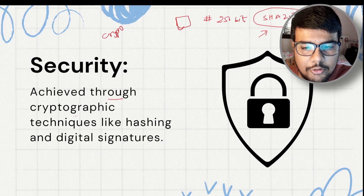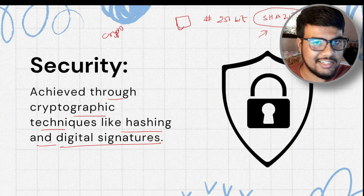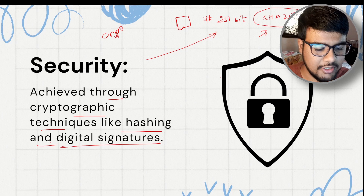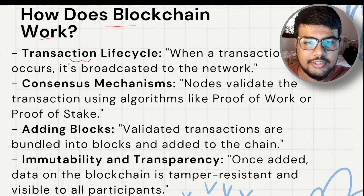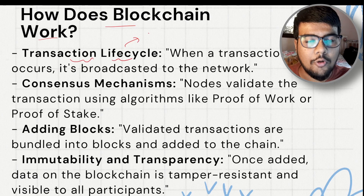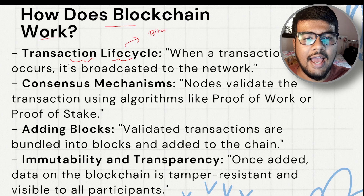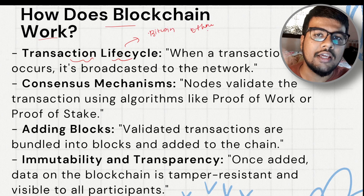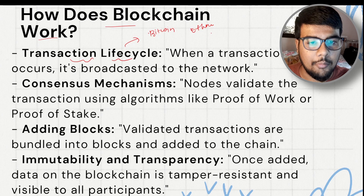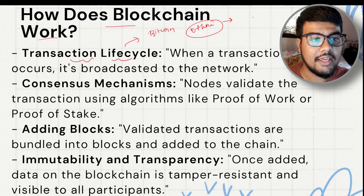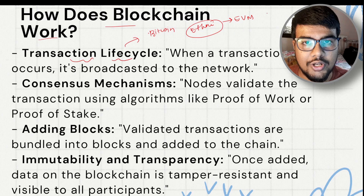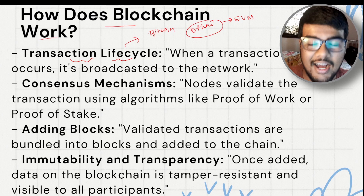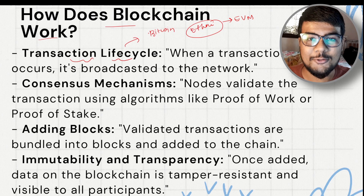Security in blockchain is achieved through cryptographic techniques like hashing and digital signatures. Now, how does blockchain work? The transaction lifecycle depends on the network. Bitcoin has its own transaction network; Ethereum has its own. Many people ask whether Ethereum is also a cryptocurrency — Ethereum is actually a virtual machine, almost like a full computer where you can write code.